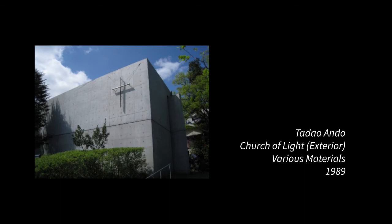One of Ando's works which demonstrates the influence of Mies' works on him is his Church of Light. Constructed in 1989 out of reinforced concrete and wood as the main materials, the design is simplistic, with the exterior being very geometric, evident by its rectangular structure, and the interior lacking ornate decoration. The church utilizes simple concrete walls combined with minimal use of glass, which allows for little light, creating a minimal amount of natural light. When combined with the plain features of the concrete walls, this creates a quiet space of worship, linking to Mies' concept of Less is More. Ando's Church of Light features similar principles to Mies' German Pavilion, such as simplistic geometric structures and the usage of modern materials such as concrete and glass.